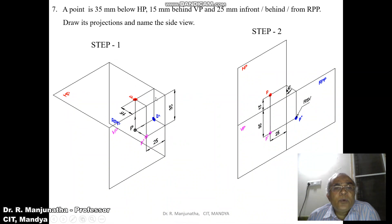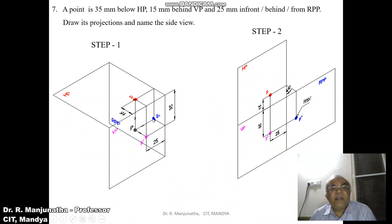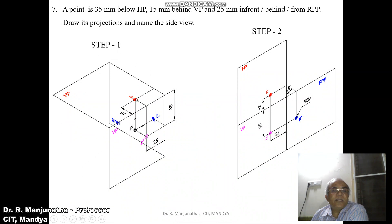When you look from the right side view, you can see the object's distance below HP and also behind VP. You can see both the front view distance and the top view distance. The front view distance and top view distance are both visible. When you look from the front view, you can see the 25mm behind RPP, and when you look from the top view, the 25mm behind RPP can also be seen in the horizontal plane.